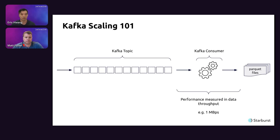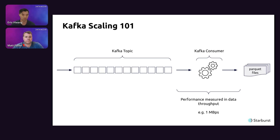Kafka can be thought of as a distributed queue where producers drop data in and consumers take data off the other end. In our case, consumers materialize that data into your data lake as an Iceberg table. When we think about scale, we think about throughput — how much data per second the system can handle. If an ingestion process is unable to keep up with the flow of data, the system enters a backlog state, where data accumulates faster than the consumer can process it. Kafka administrators aim to avoid this.